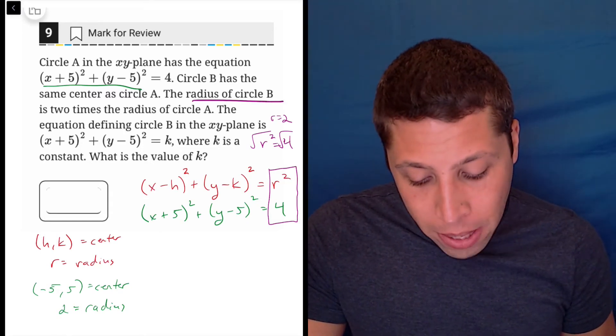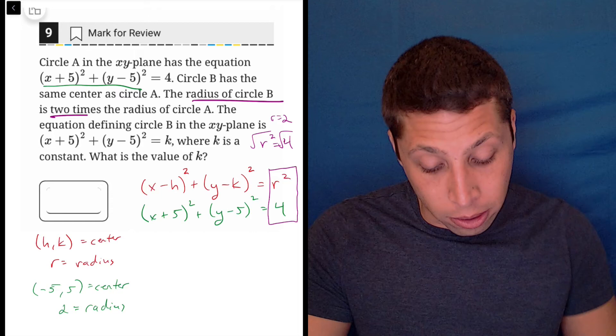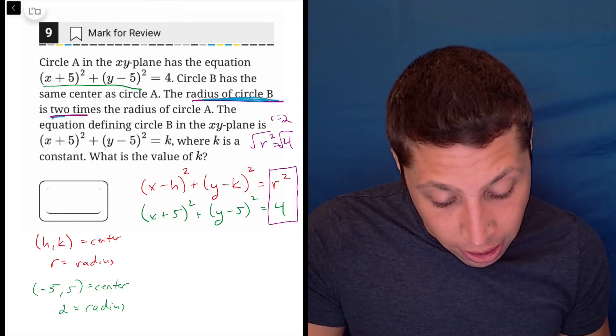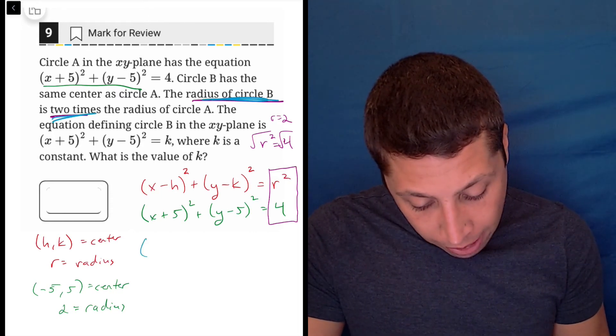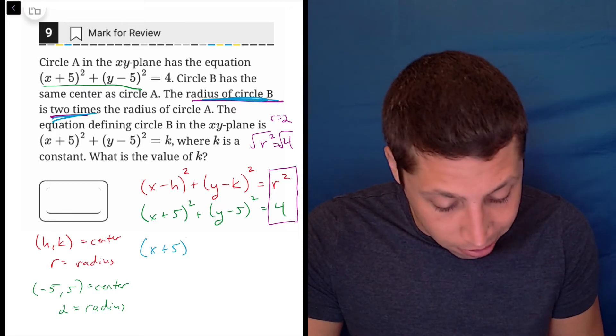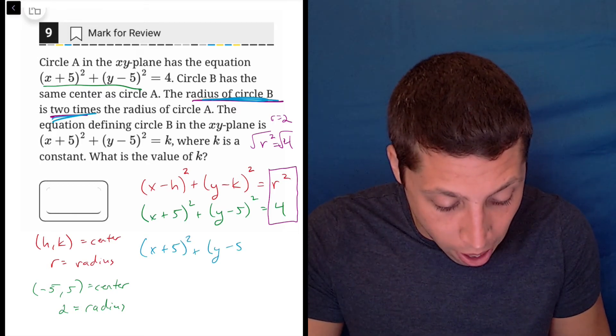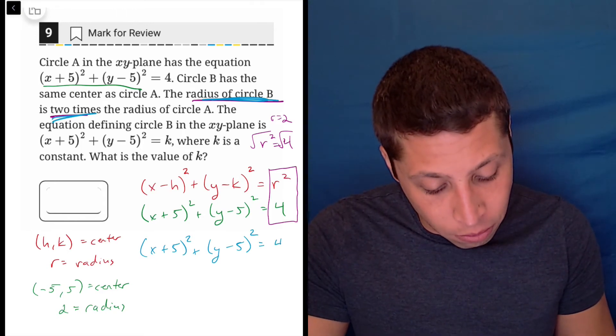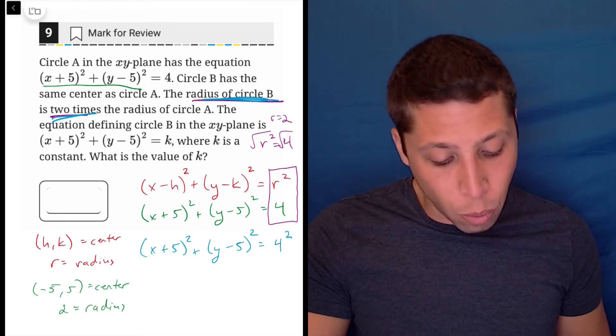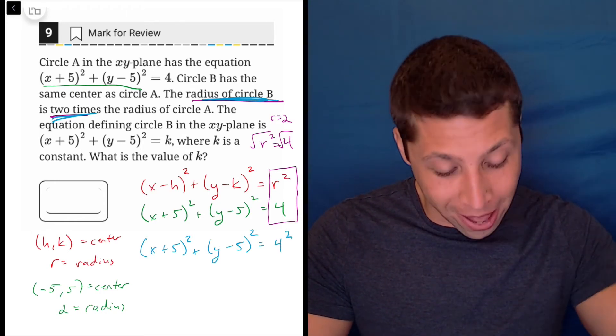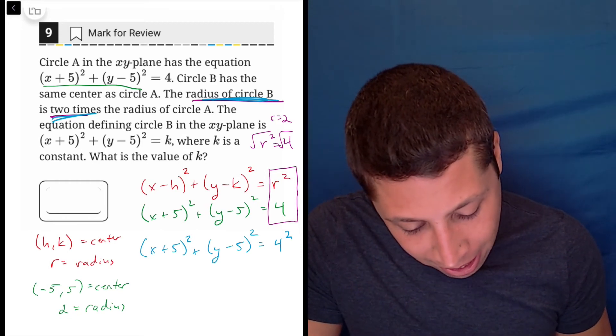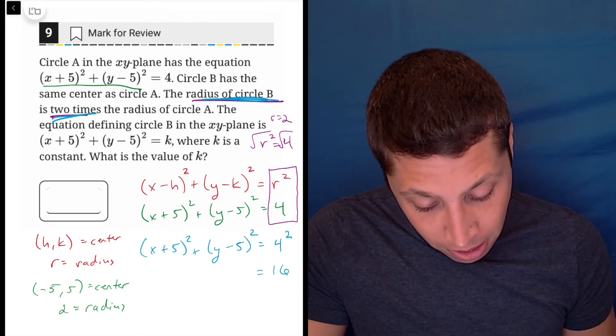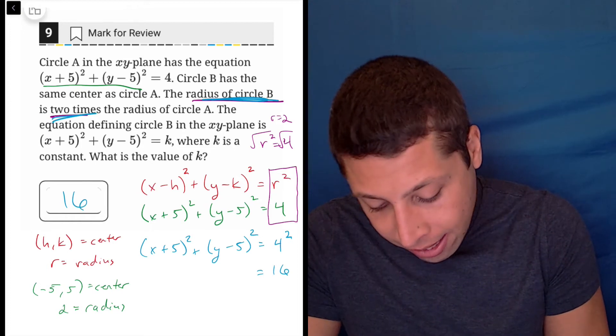They tell us the radius of circle B is 2 times the radius of circle A. So let's get a new equation here. Circle B would be x plus 5 squared plus y minus 5 squared, and twice 2 is 4. So 4 squared, because we have to square that again, is going to be 16. So what is the value of k? It is 16.